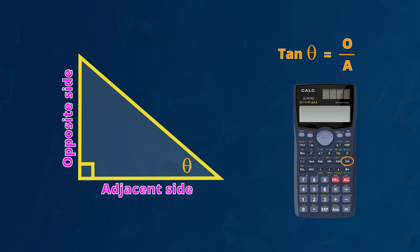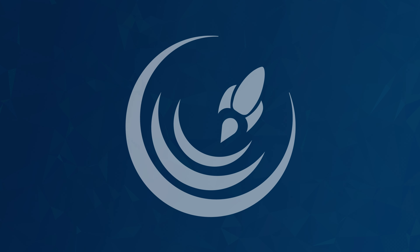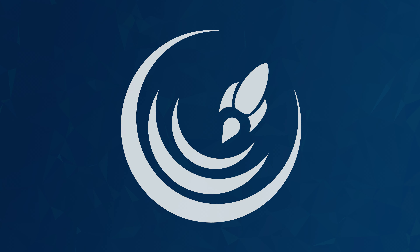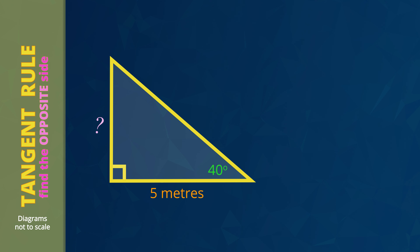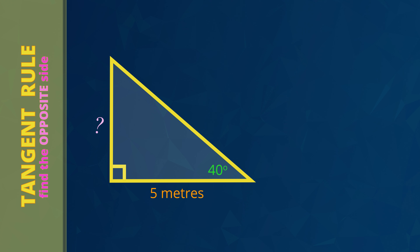There are two more things to know before we do some examples. Notice that the tan rule has no hypotenuse in its rule, so this rule is used a lot in building design to work out vertical heights and horizontal lengths. We also use a scientific calculator. There is a tan button on the calculator. This tan button has all of the calculations for the theta angles that compare the vertical and horizontal lengths — that's the opposite sides divided by the adjacent sides in right angle triangles. Now we're ready to see examples.